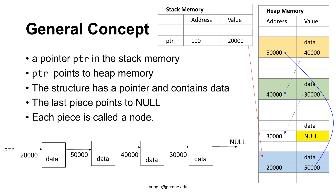This slide shows a general concept about how dynamic structures work. A pointer in the stack memory stores the address of a piece of heap memory. Each piece of memory contains two parts: the first part is a pointer to another piece of memory, and the second part stores the data. Suppose PTR is a pointer in the stack memory with value 20,000. At address 20,000 is another pointer whose value stores the address 50,000, and data is stored in this piece of memory. Through the pointer, we can find another piece of memory at address 50,000, which stores the address 40,000 and also contains some data.